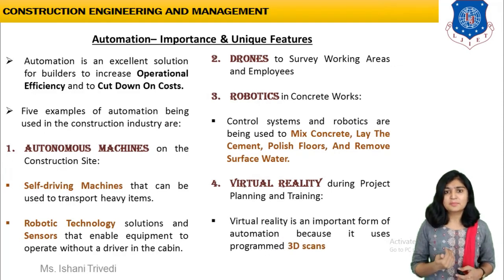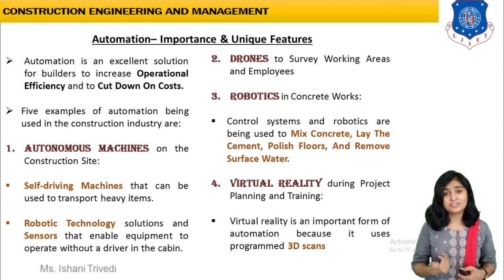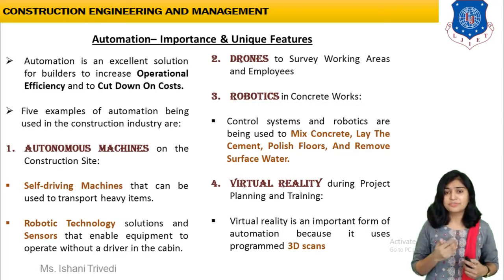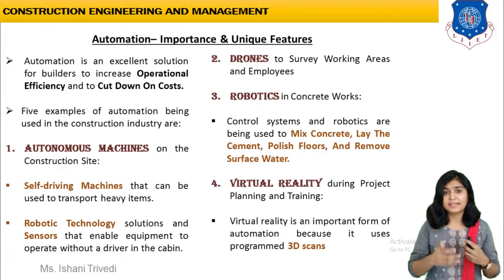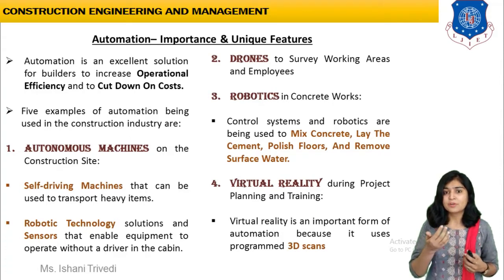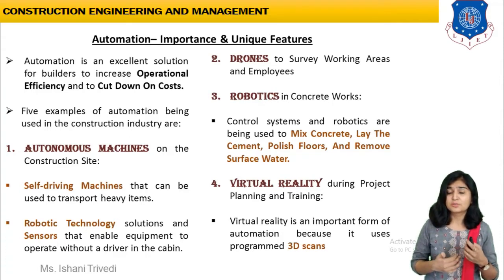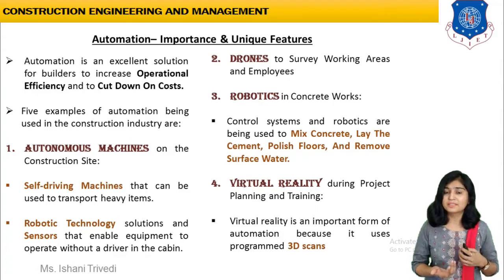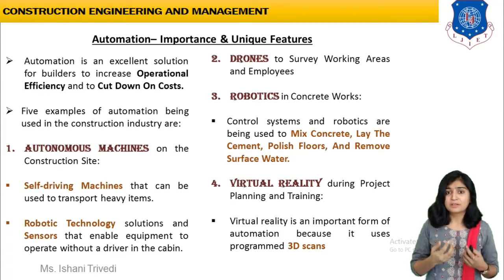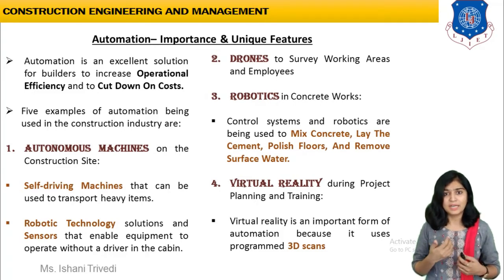Next, we are going to talk about the unique features regarding automation. Just as I discussed the unique features of traditional construction equipment, there are certain unique features recognized with the automation part. For automated equipment, the major outcomes and aspects will achieve even greater output.